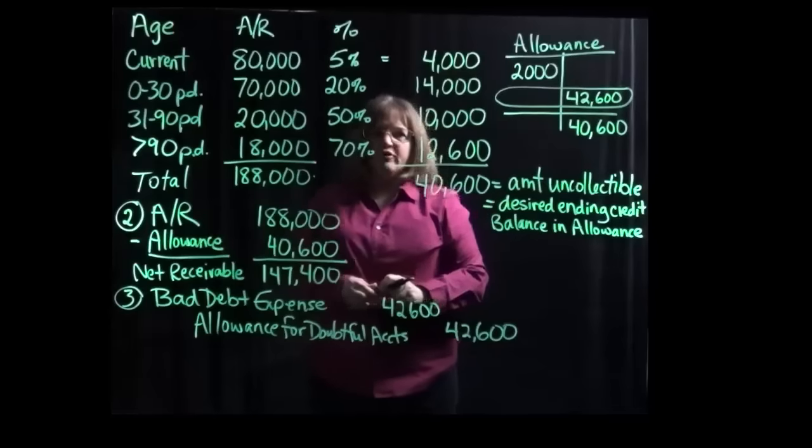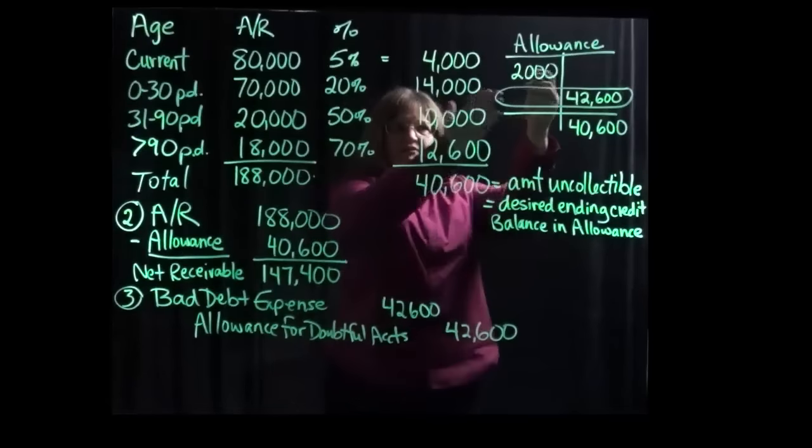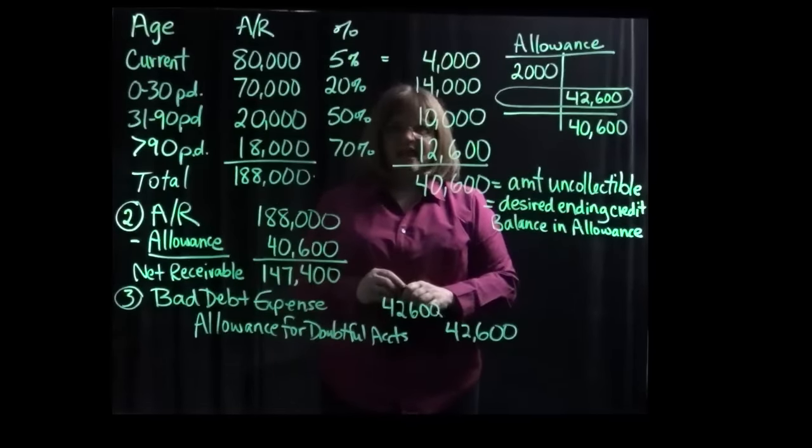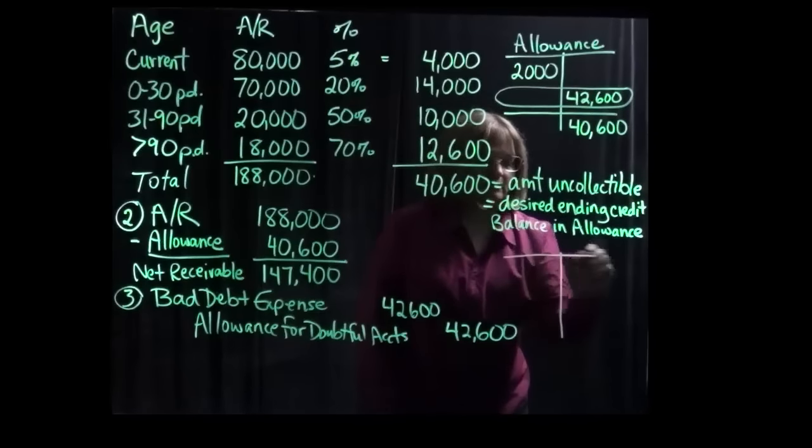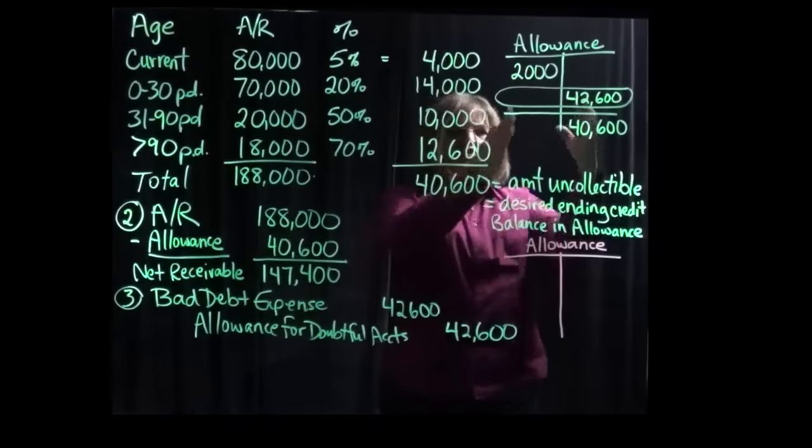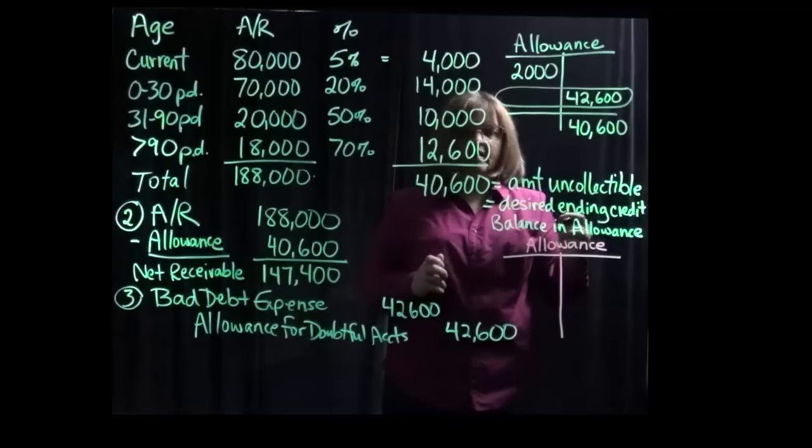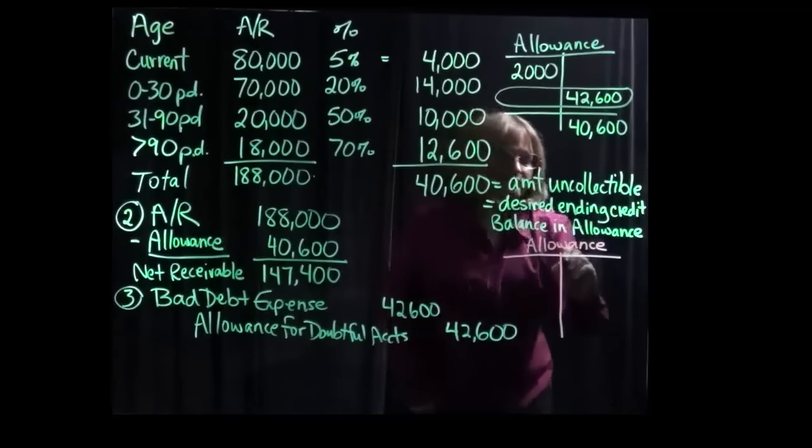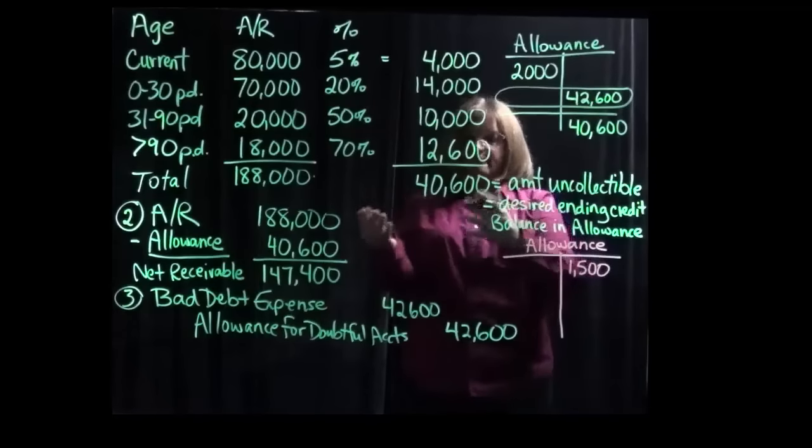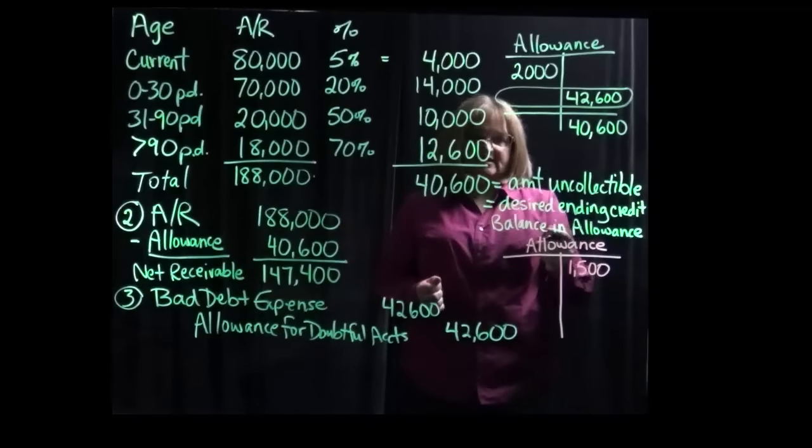Part four then says what if instead of this $2,000 debit balance, the allowance instead had a credit balance of $1,500. So they're saying ignore what we did in part three and say instead that we had a $1,500 balance in the allowance before we make any bad debt expense entry.